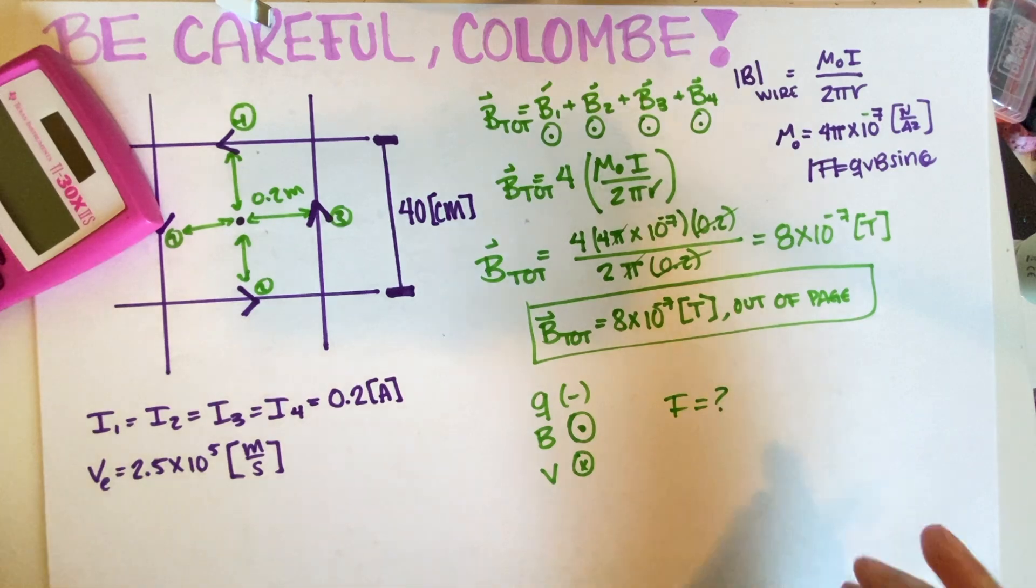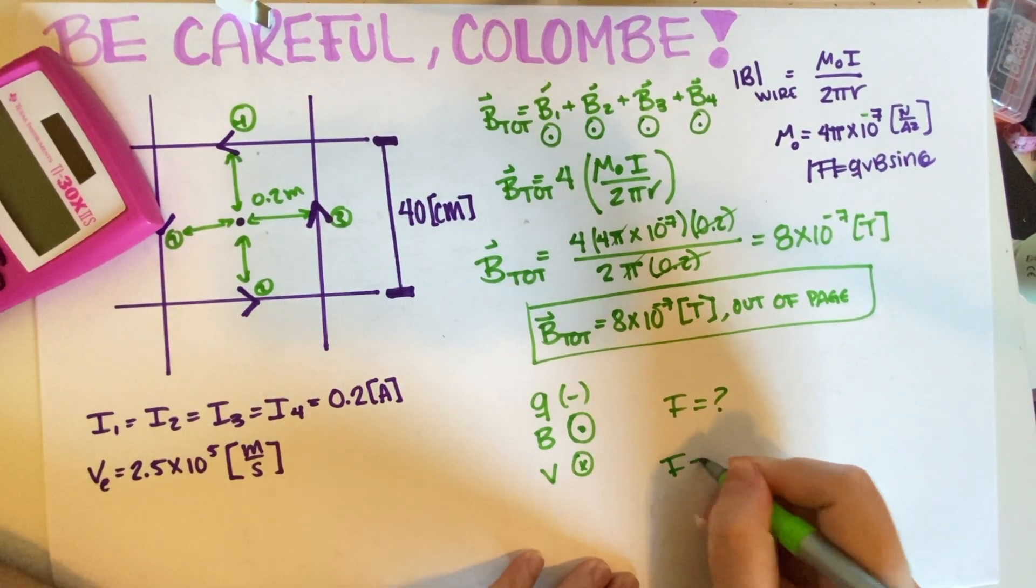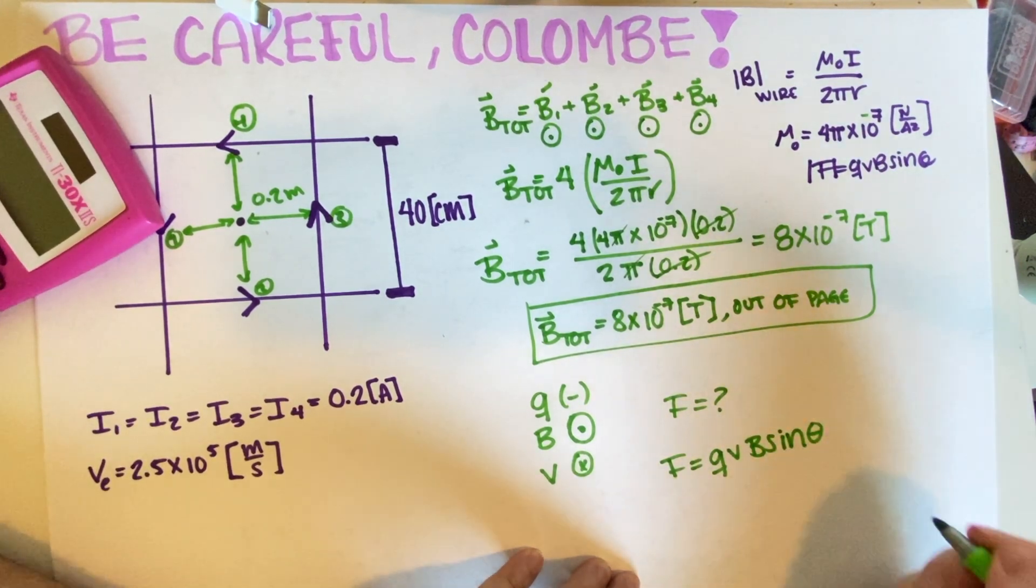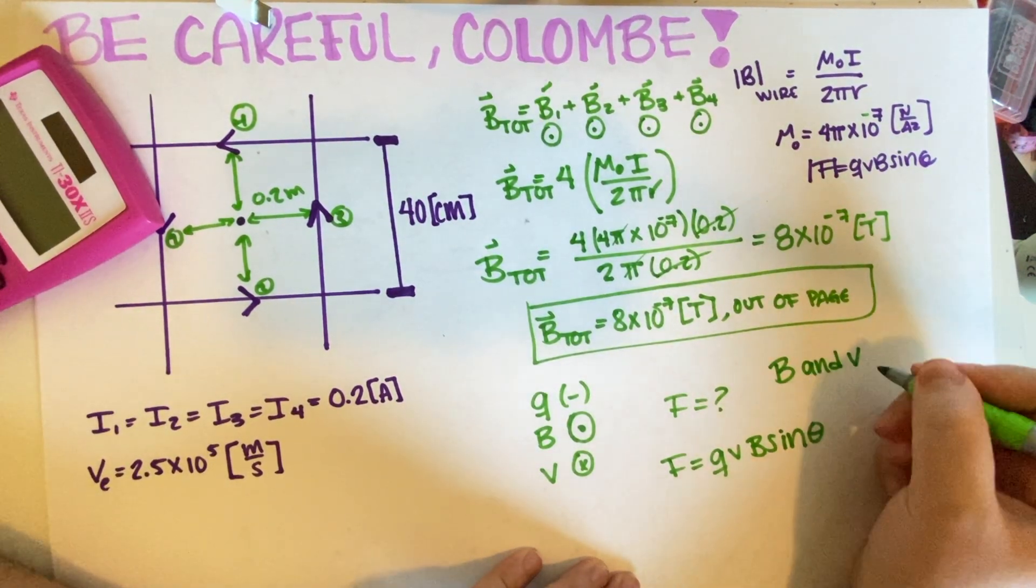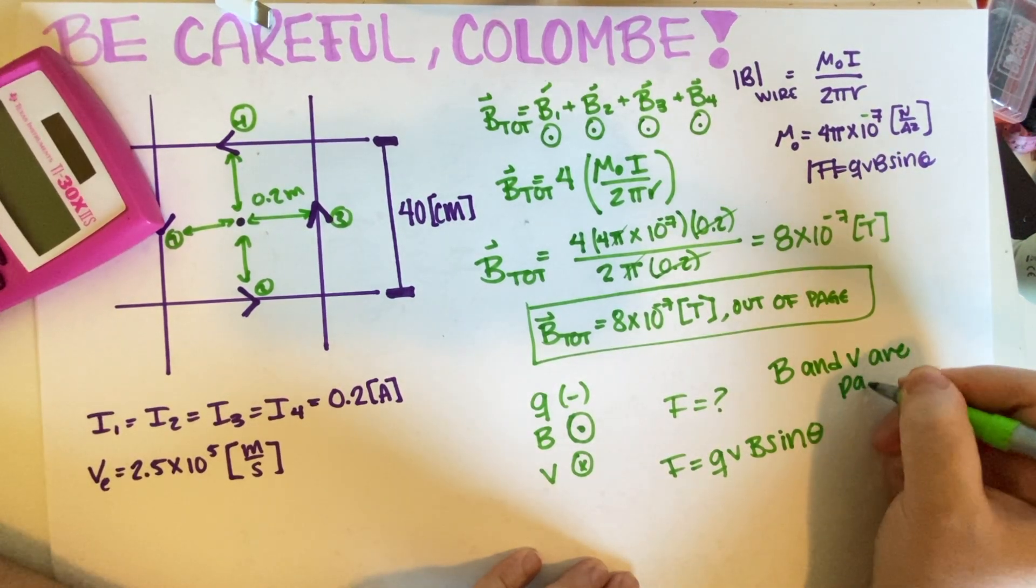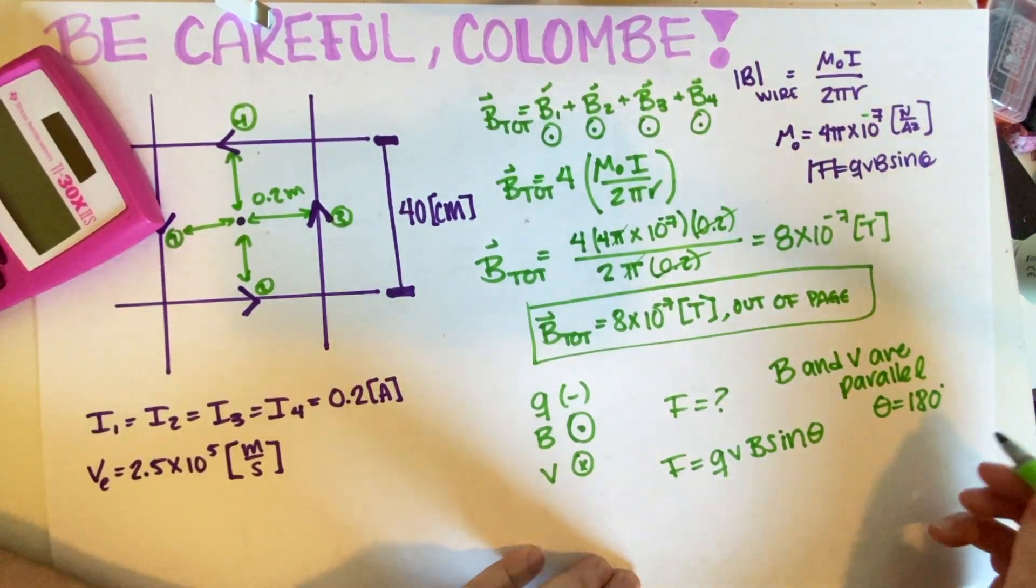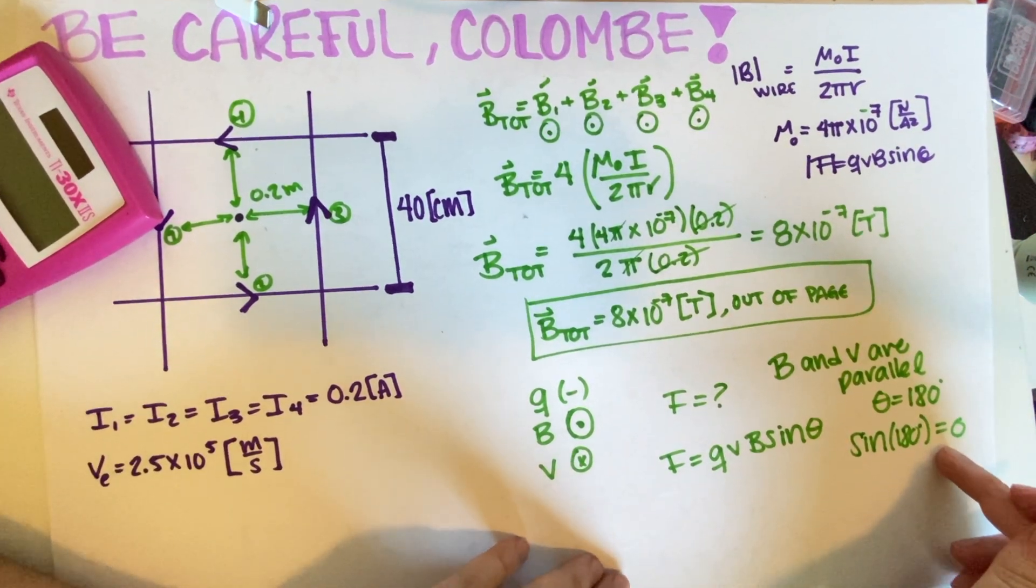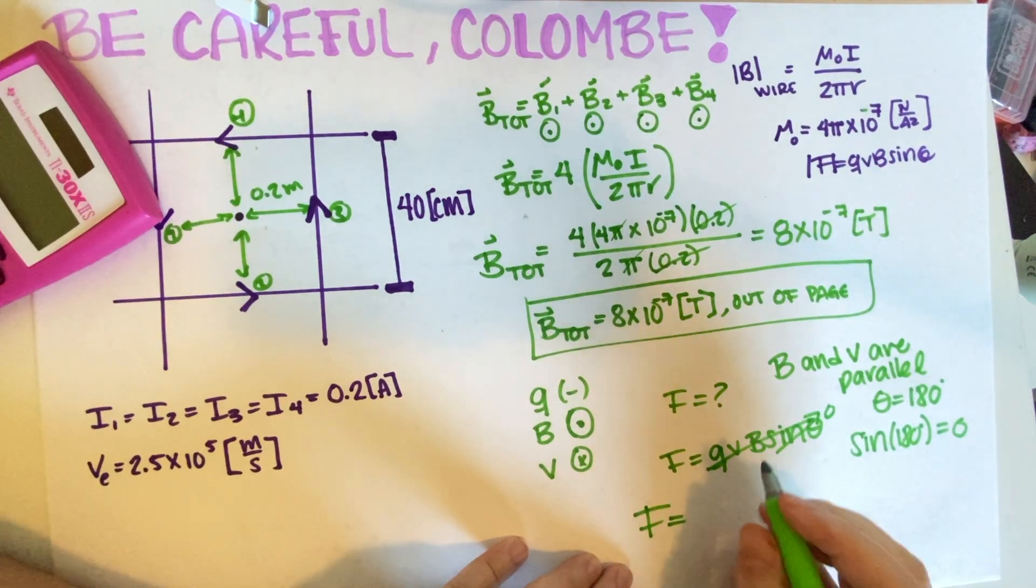So what is F? Well, in this case, F is pretty easy because we don't have to do anything. F, if we remember the definition, is Q V B sine of our angle. In this case, these two vectors are parallel. This means that our angle is 180 degrees, either zero or 180, whatever you want to think about. And then sine of 180 degrees is equal to zero. So because of this, if this is equal to zero, then the entire thing is equal to zero.